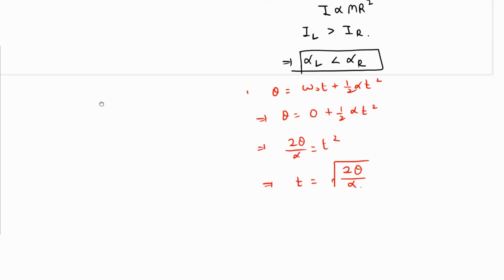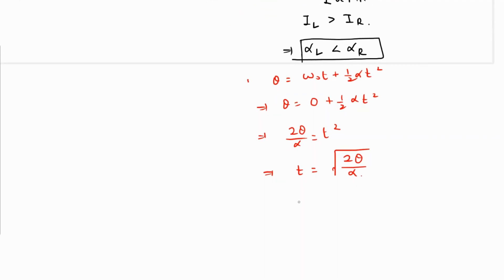We can clearly see that the time is inversely proportional to the square root of α, which means that more is the value of α, less will be the time taken. Hence, the time taken for the left one is going to be greater because this α is less.